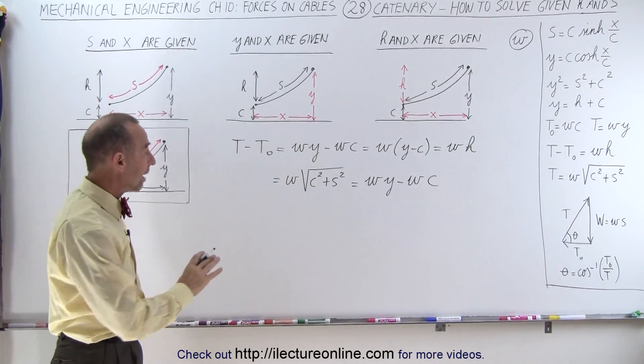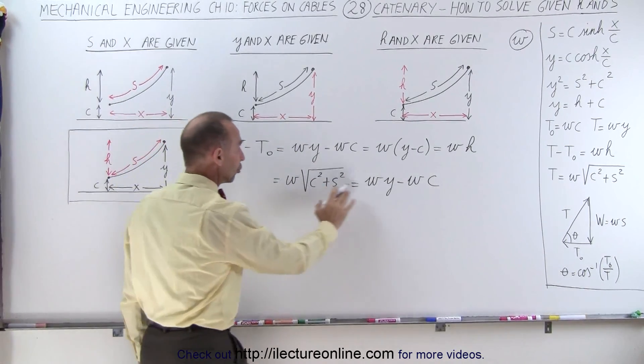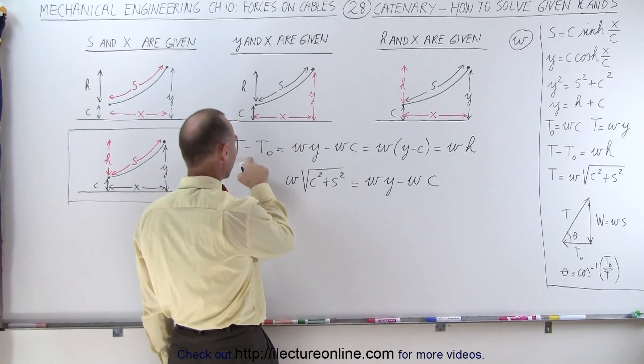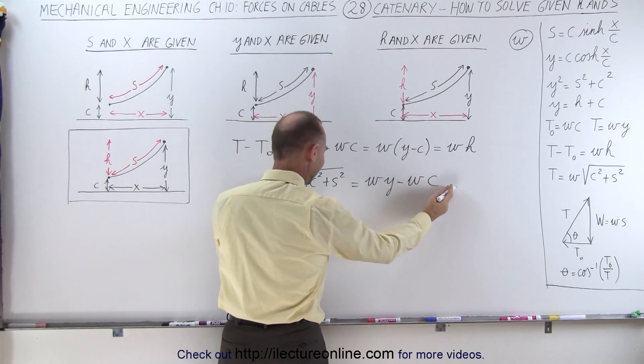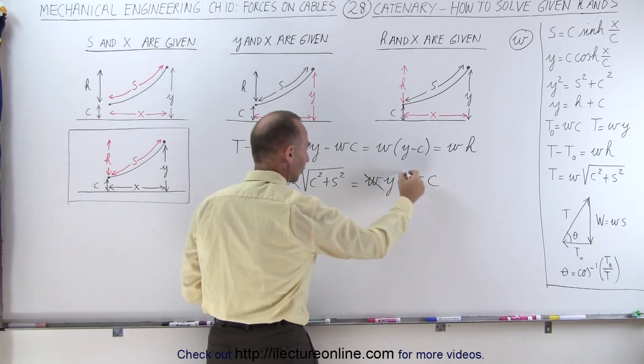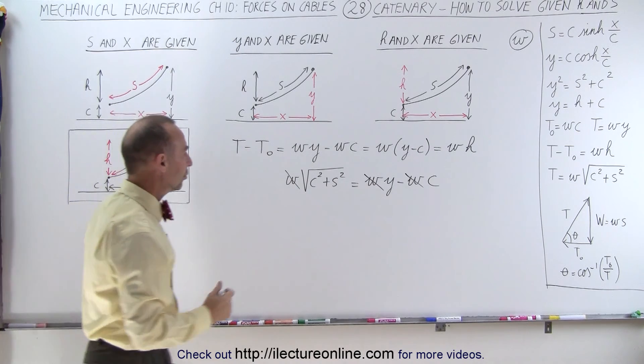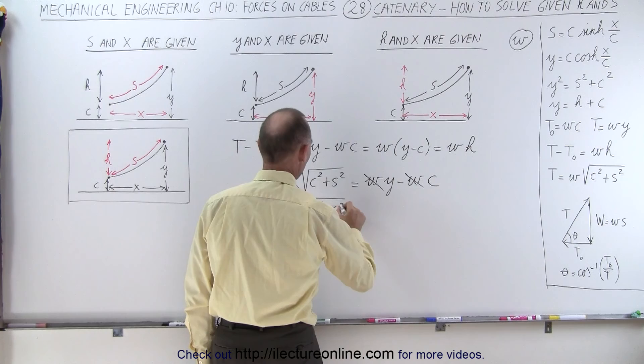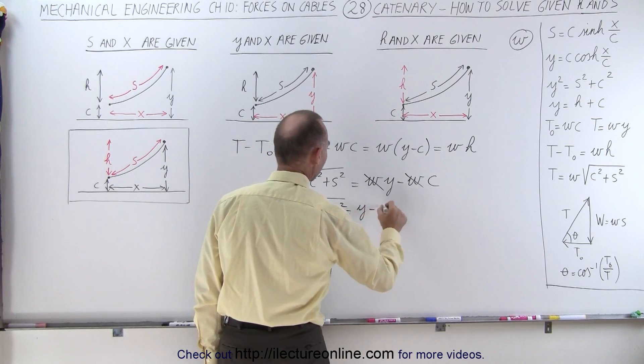Now notice that we have a weight per unit length in each term of the equation. We can cut out the weight per unit length or factor out the weight per unit length for each, which means that the square root of C square plus S square is equal to Y minus C.